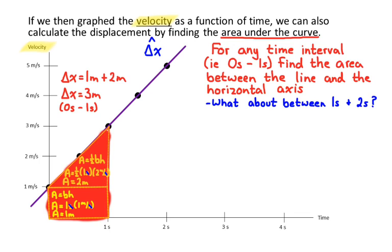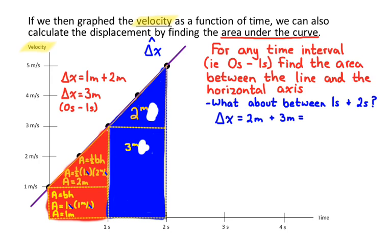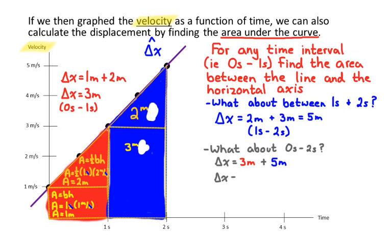For the interval between one and two seconds, we do the same thing — break it into a triangle and a rectangle. The triangle area is two meters and the rectangle area is three meters, giving a displacement of five meters between one and two seconds. So between zero and one second the object moves three meters, and between one and two seconds it moves five meters. To find displacement from zero to two seconds, we add those two pieces: three plus five equals eight meters.